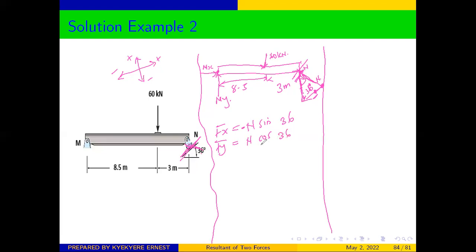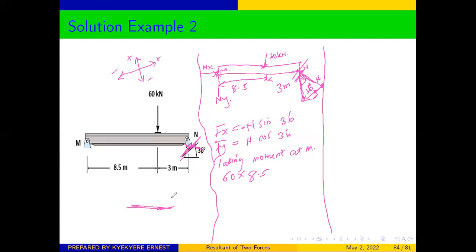From here, we decide to take moments at the point that will eliminate most of the forces. We take moments at point A. When we take moments at A, we get 60 kilonewtons times its perpendicular distance from A, which is 8.5 meters. The force is acting such that it creates clockwise rotation about A, so this term is negative.